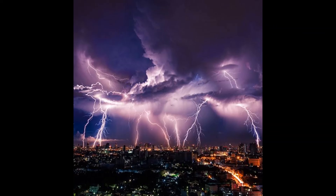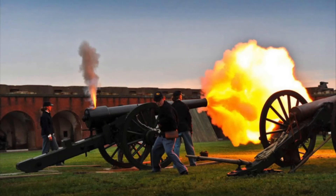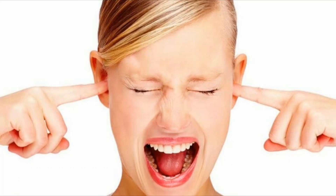During lightning, the thundering sound and light are emitted at the same time, but we see the light first and hear the sound after. The reason is that the speed of sound is slower than the speed of light. When a cannon is fired, the sound and smoke are emitted at the same time, but a far-away observer can see the smoke first and hear the sound later. Try to find the reason for this incident at the end of the lesson.